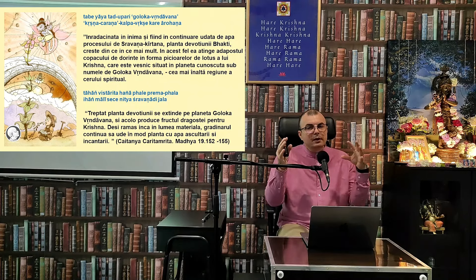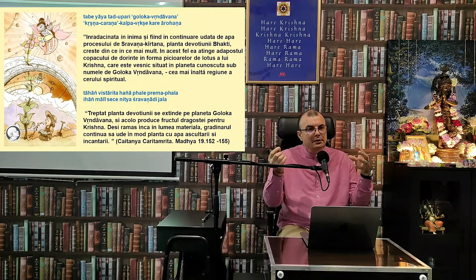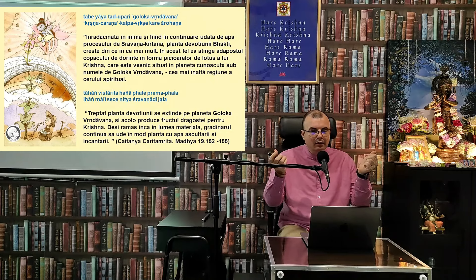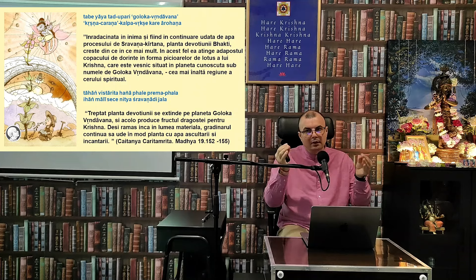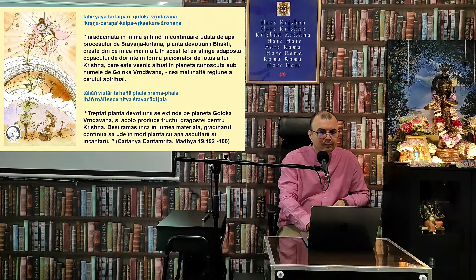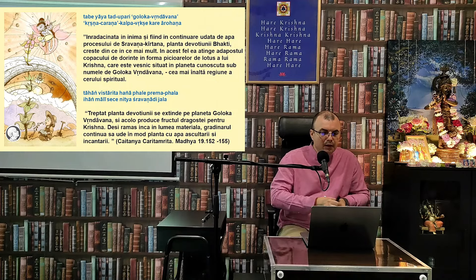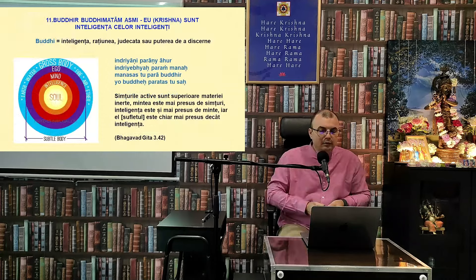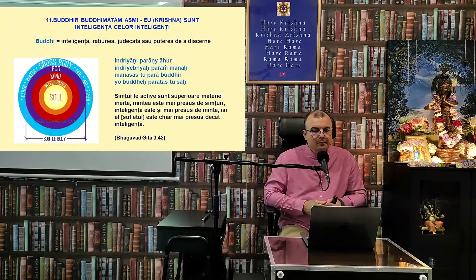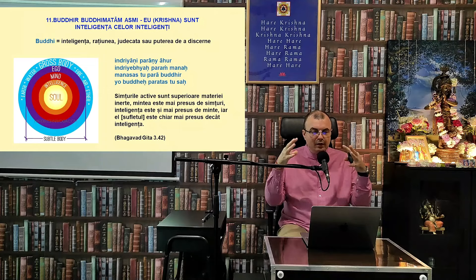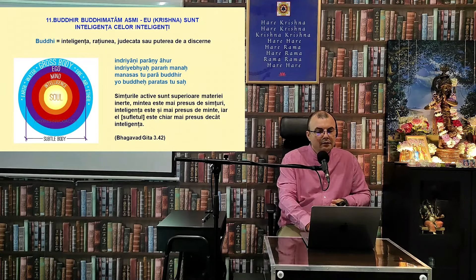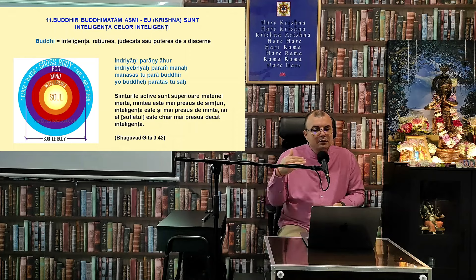Aceasta a fost o mică explicație despre ce este Bija, sămânța originară a lucrurilor, materiale sau spirituale, dar în spatele acestei semințe este Suprema Personalitate a Divinității. Acum vom trece la exemplul 11 — despre cauza verticală și orizontală a Universului, substratul și esența care stă în spatele lucrurilor. Krishna spune: Buddhir buddhimatam asmi — eu, Krishna, sunt inteligența celor inteligenți.